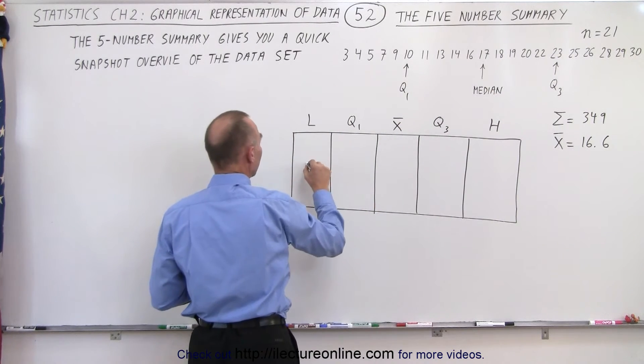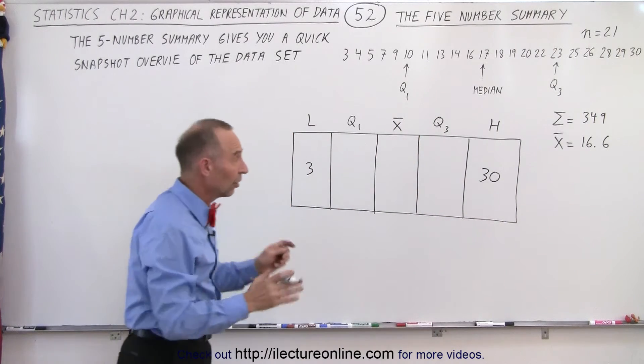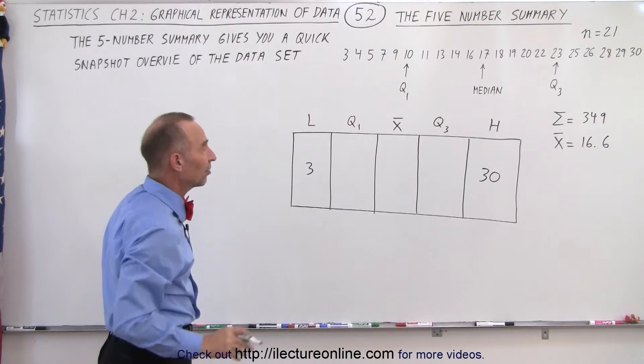So in this case the low value is equal to 3. The high value is equal to 30. So this quickly tells us the range of values in our data set.